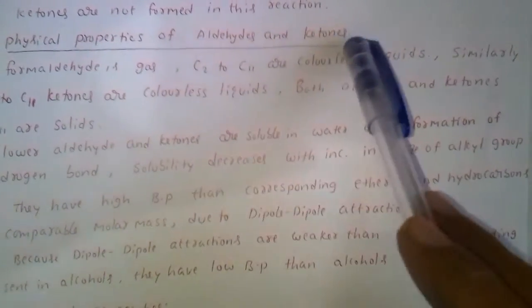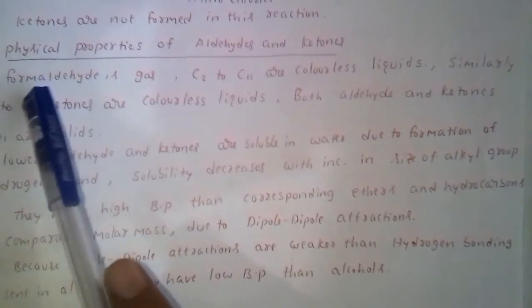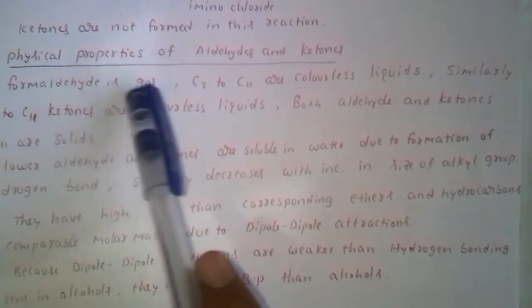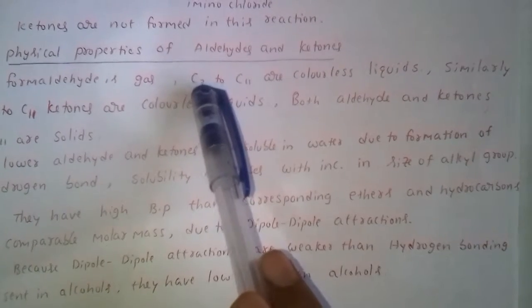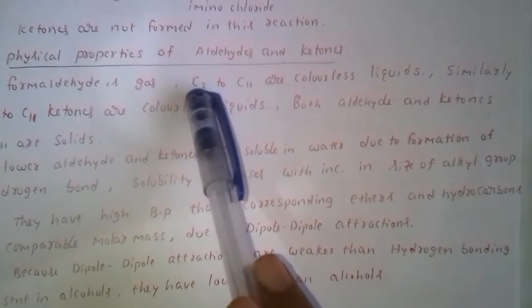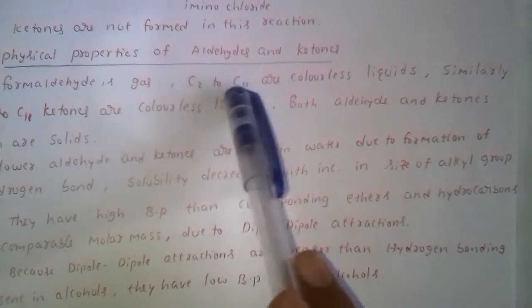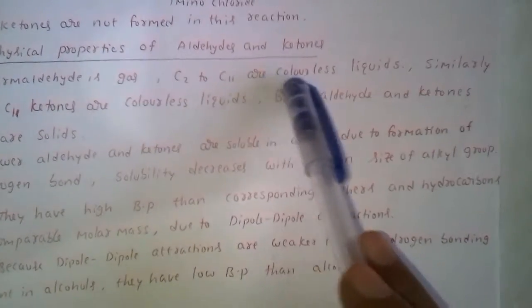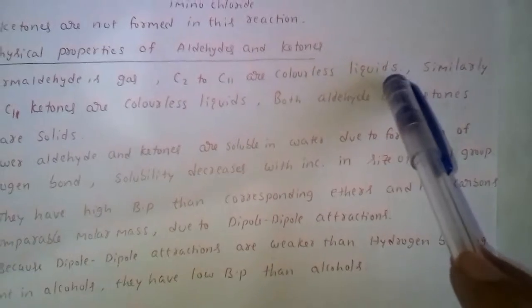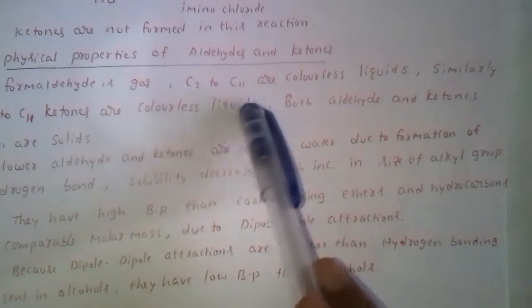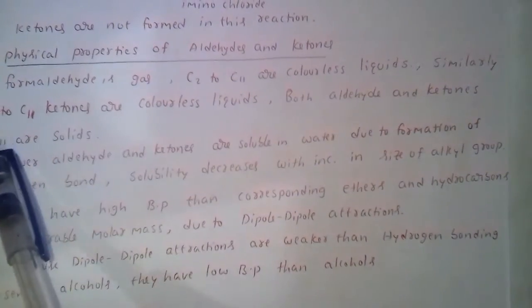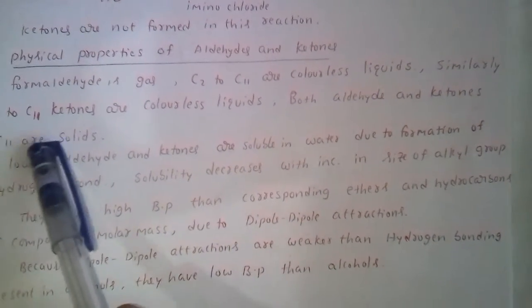Physical properties of aldehydes and ketones: Formaldehyde is a gas. Aldehydes containing C2 to C11 carbons are colorless liquids. Similarly, C3 to C11 ketones are colorless liquids. Both aldehydes and ketones containing greater than 11 carbons are solids.